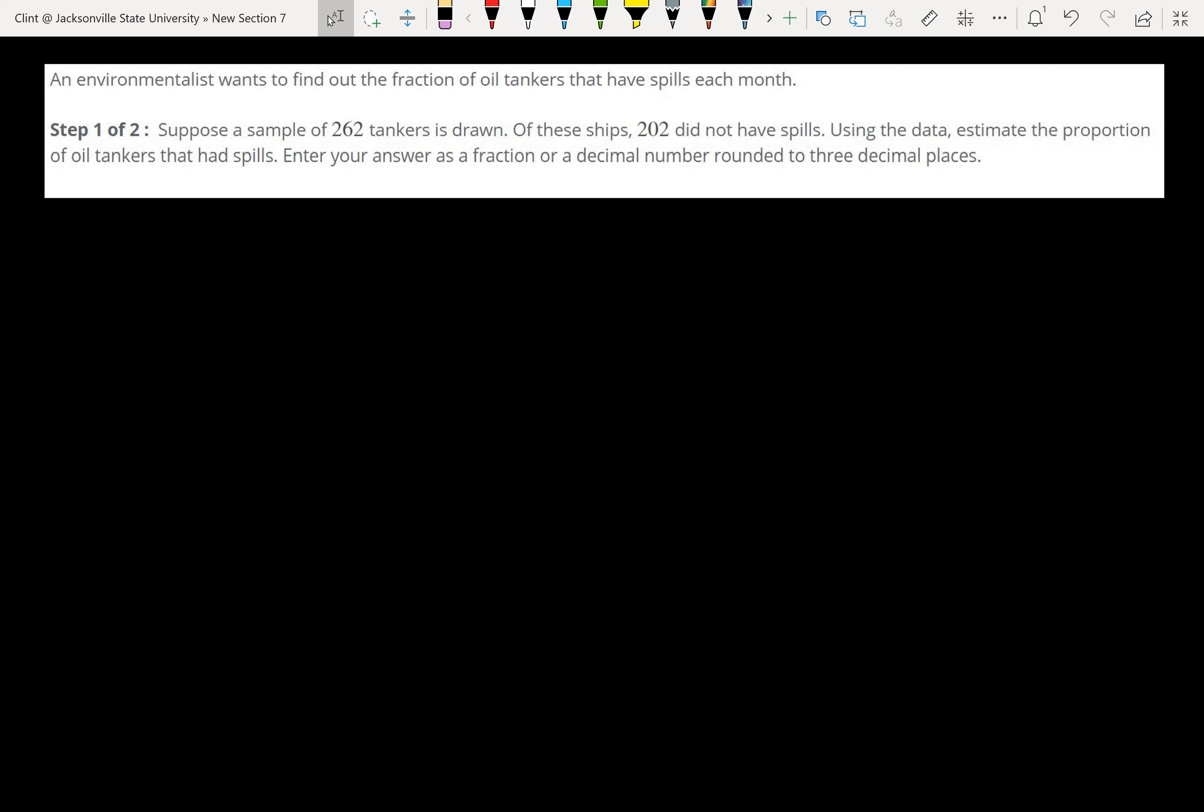So a couple of important things, the number it gives us tells us our sample size is 262, that 202 did not have spills, and then it tells us to estimate the proportion of tankers that had spills. So read carefully, that is something that they do occasionally, they give us the opposite of what we need. So what we're wanting to do, we're wanting to estimate the proportion of oil tankers that had spills.